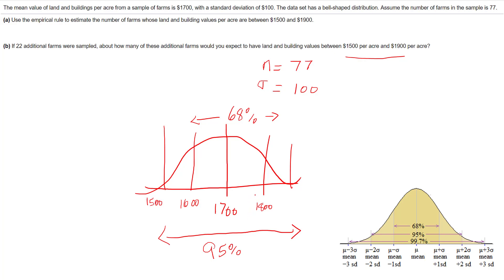Usually you'll see me write things like 68% is the mean minus one standard deviation to the mean plus one standard deviation, and that's where I'm getting $1,600 and $1,800. And 95% is the mean minus two standard deviations to the mean plus two standard deviations, and that's where I'm getting $1,500 and $1,900.